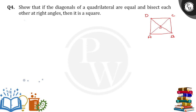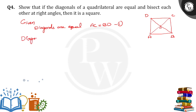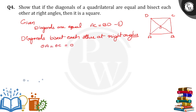What is the given data? Given that the diagonals of a quadrilateral are equal. So what are the equal things here? AC is equal to BD — take it as equation number 1. And diagonals bisect each other at right angles. Bisect means OA is equal to OC is equal to OB is equal to OD. Since the diagonals are equal, all four half-segments are equal. Take it as equation number 2.